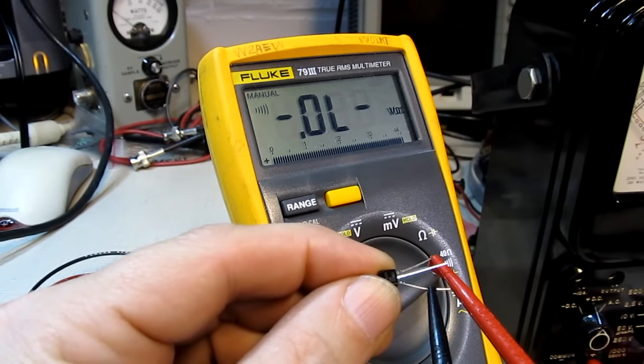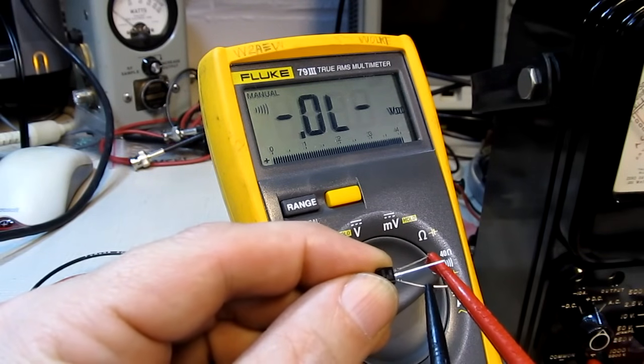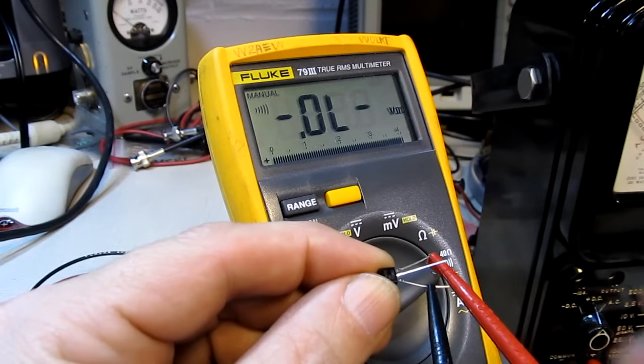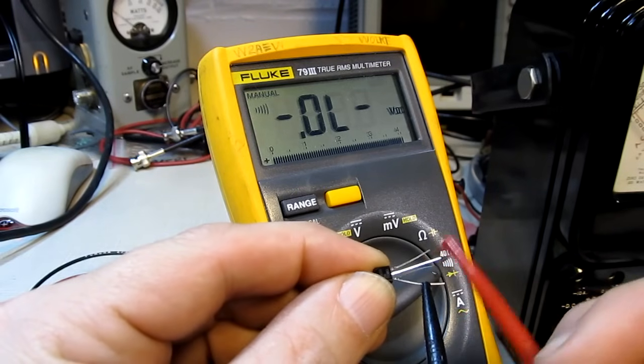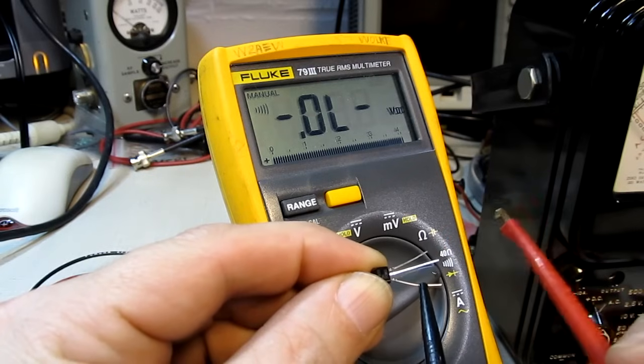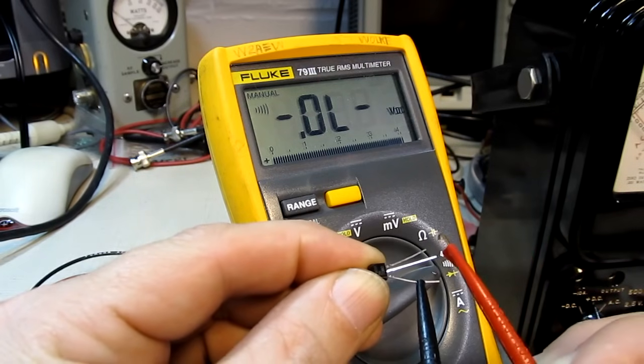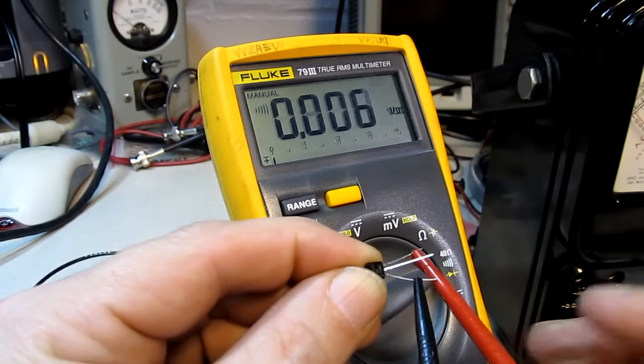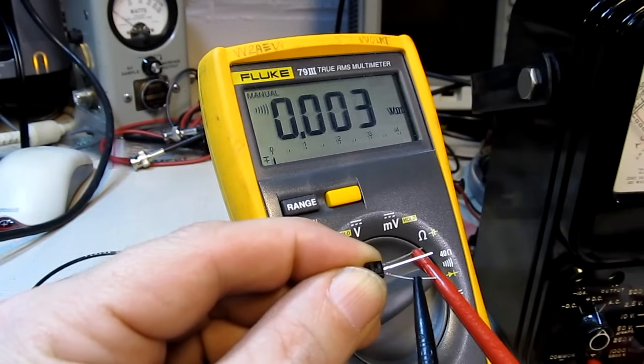Now, the gate, I mentioned, acts like a small capacitor. So, if we put some voltage on it, it will charge up and hold that voltage. So, I can basically take the positive lead, momentarily touch it to the gate. We've now charged the gate up, and now when I reconnect to the drain, we can see that we have nearly a short circuit.